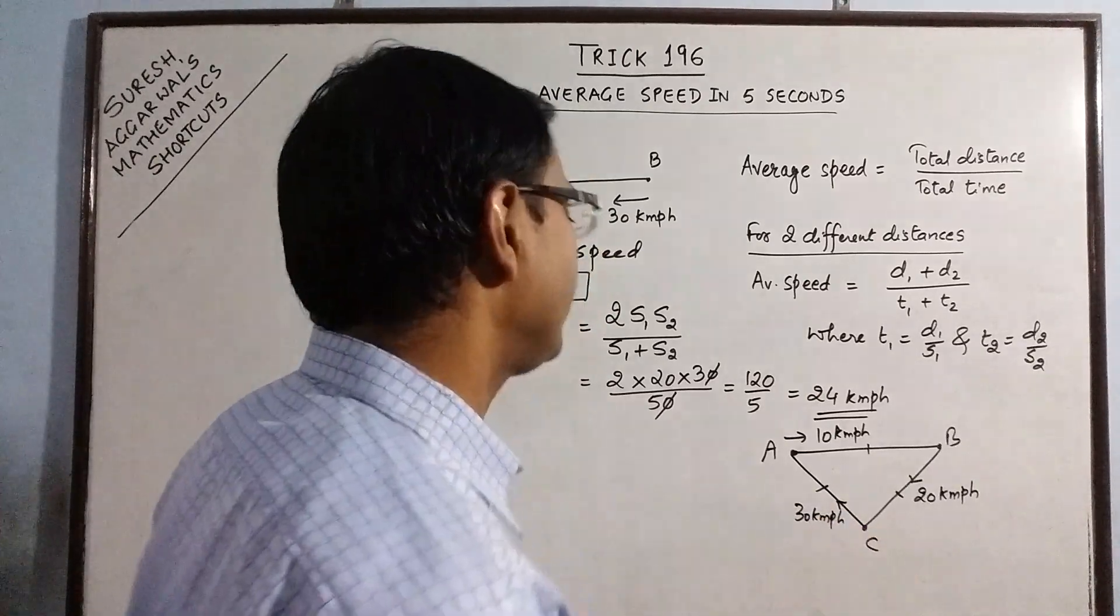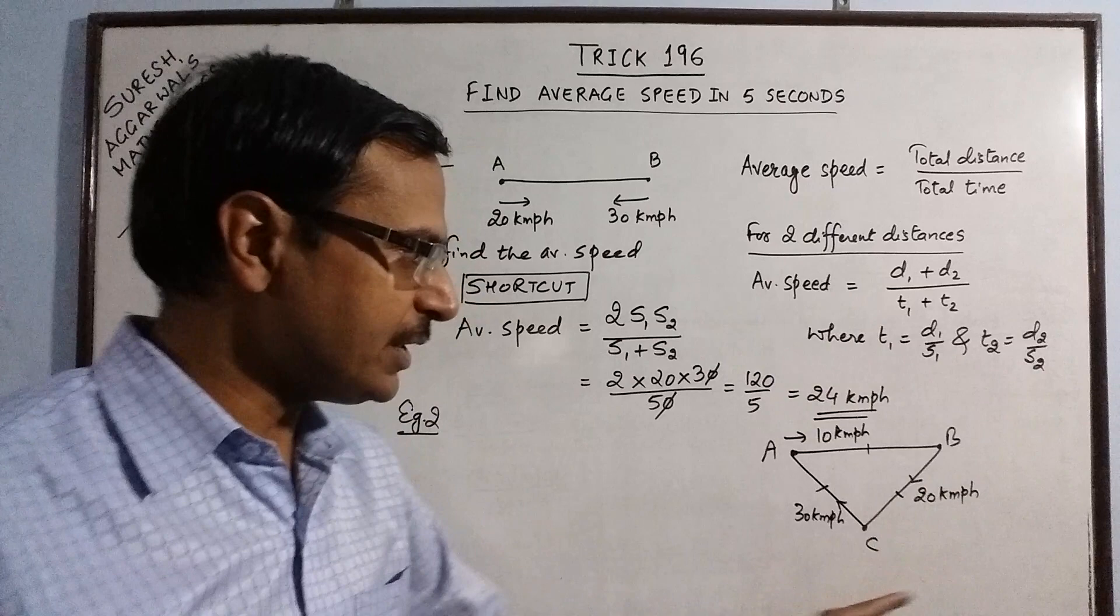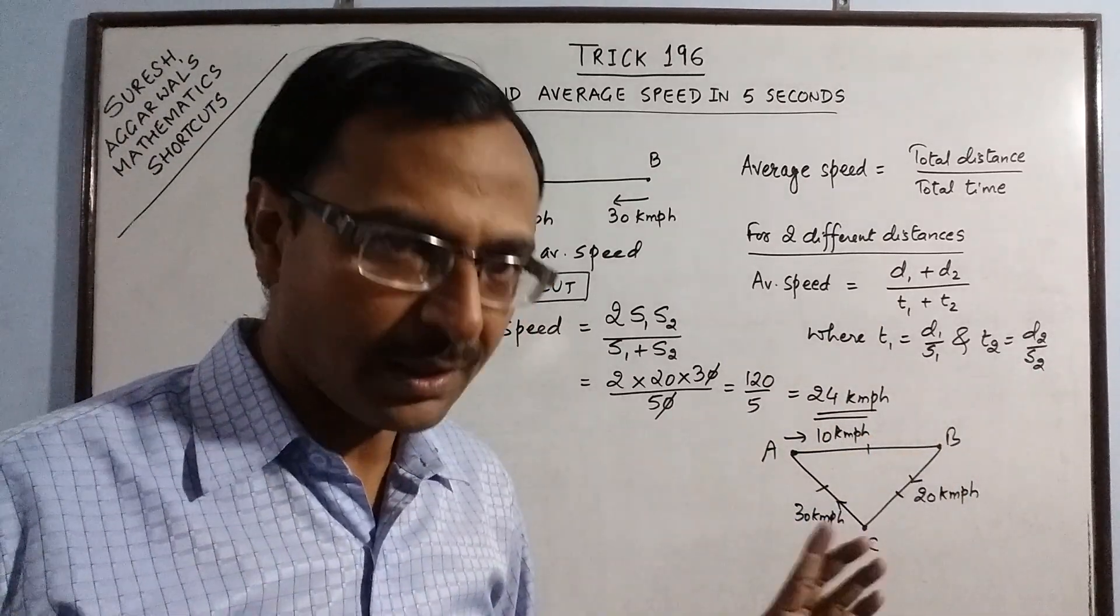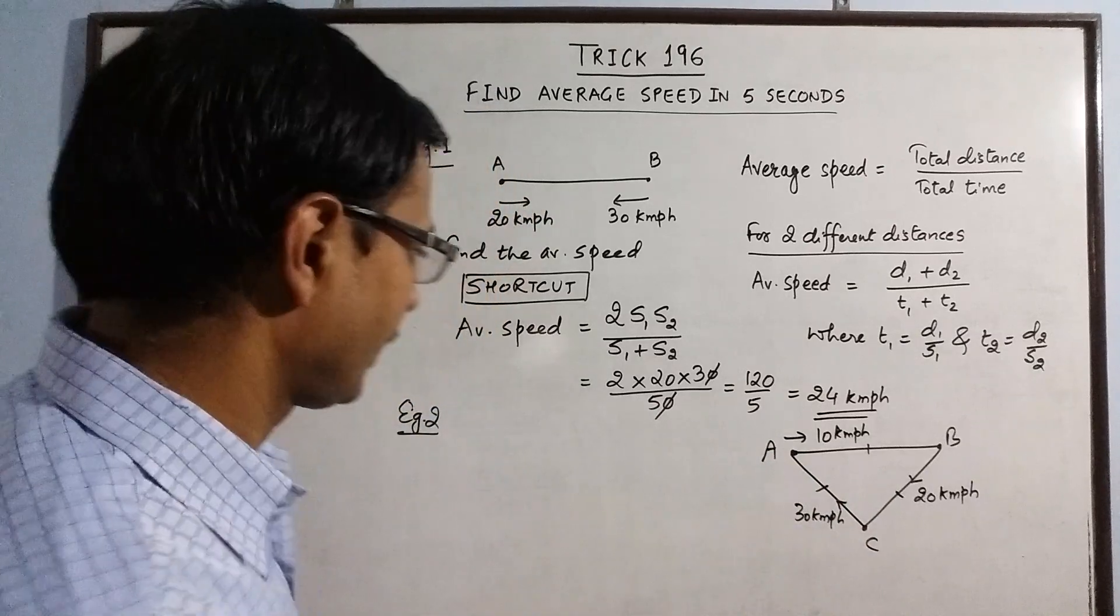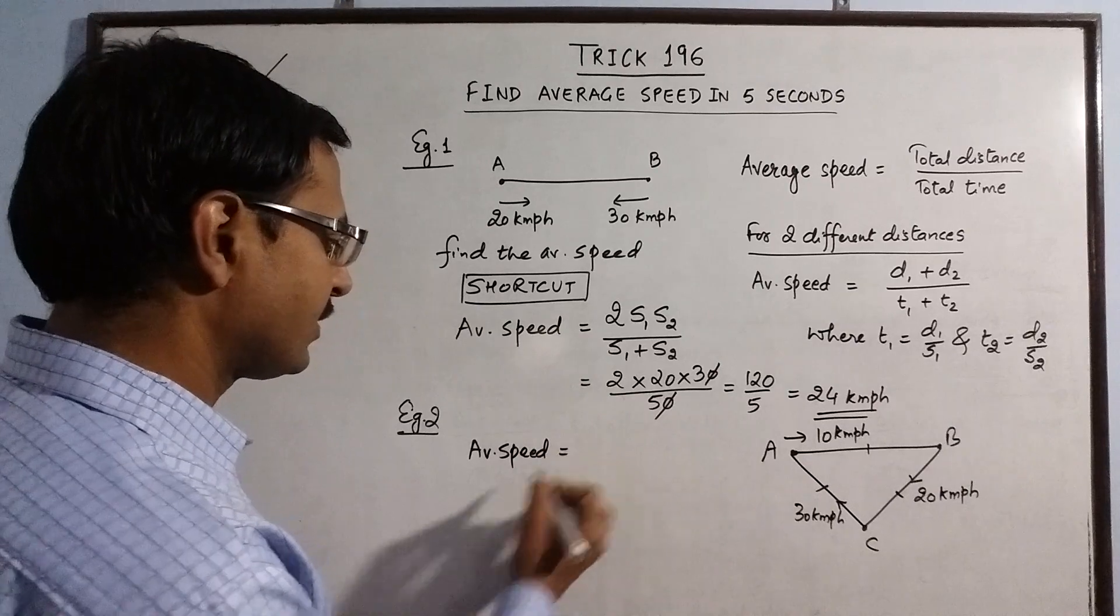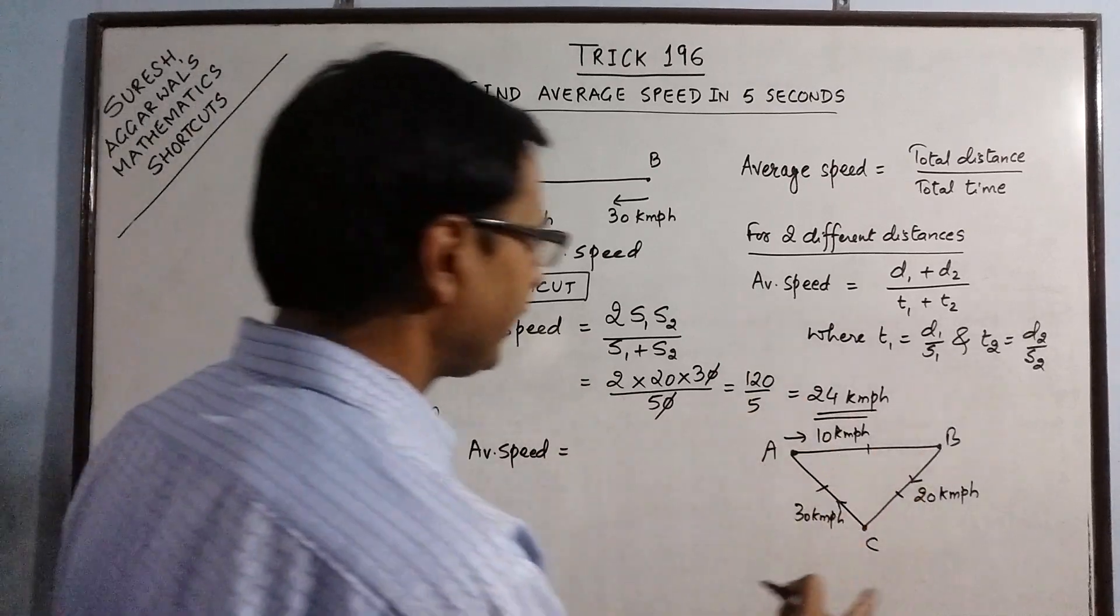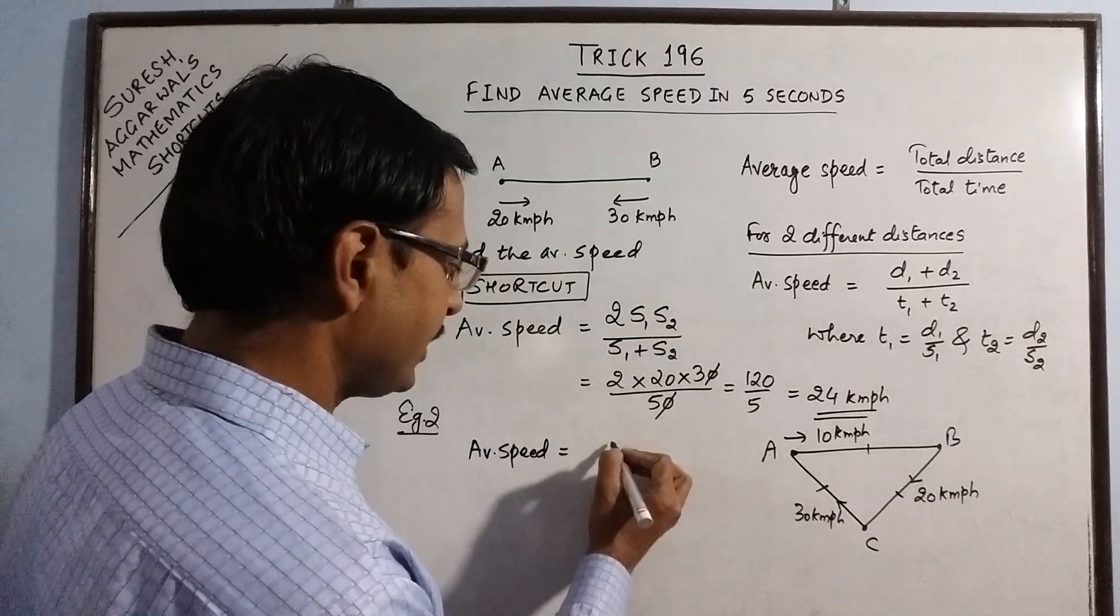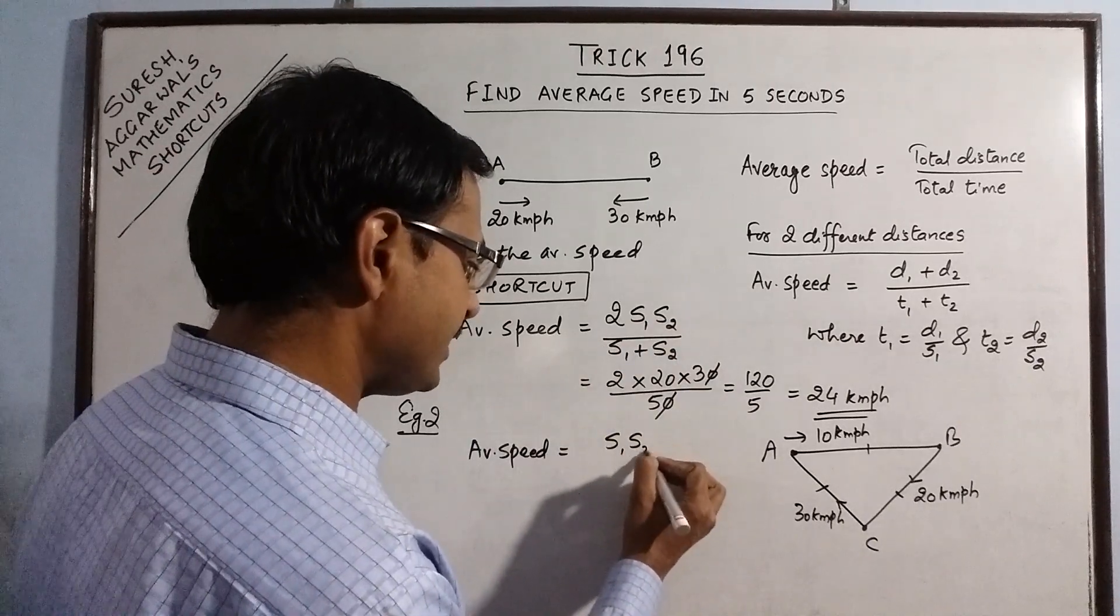Now, we need to find out the average speed over the entire journey. All the 3 distances are again same. Now, to find the average speed, we just need to find the product again. Like, here we found the product of the 2 speeds. So, here we will have the product of 3 speeds.